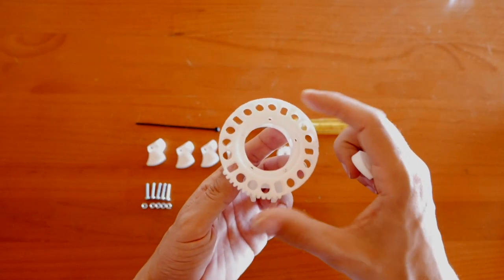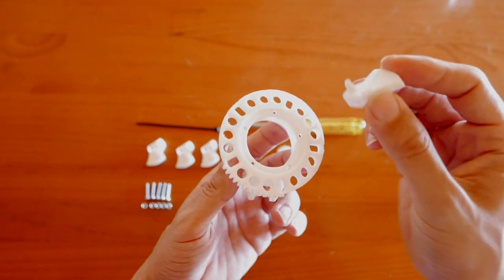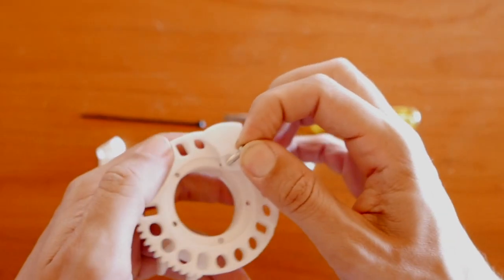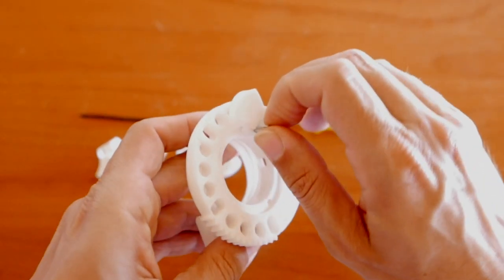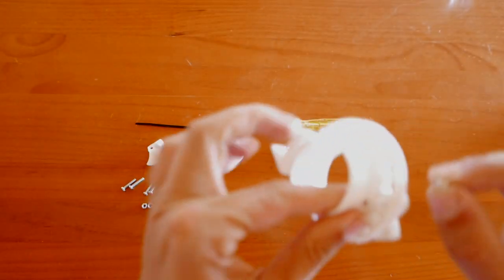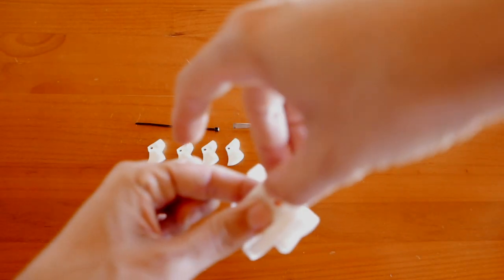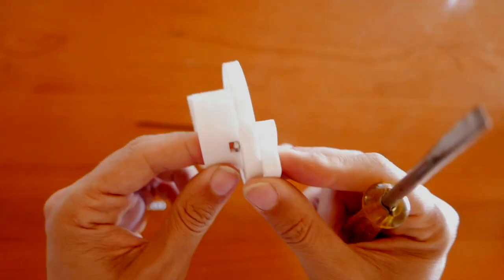We will place this piece on this one. It has 2 small sticks. We will place it here and in the hole. It's a simple system. Then, we will have to place a nut. The screw already arrived to the other side.